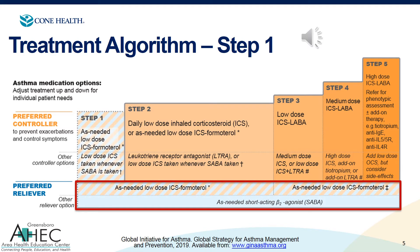If patients are on different therapies that aren't Symbicort, you would still give them as-needed short-acting beta agonist or albuterol. You might ask why you can't use any of the other ICS-LABA combinations, since they're all pretty interchangeable within the class. The reason is that formoterol in Symbicort has a pretty fast onset of action but still a prolonged duration of action. So if a patient uses it for immediate relief of symptoms, it works quickly but then hangs around. Whereas all of our other long-acting beta agonists have a longer onset of action, so a patient really couldn't use them for immediate relief. That's why formoterol is the LABA option we can use for immediate symptom relief.